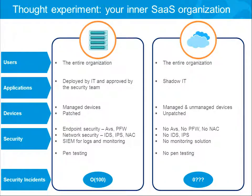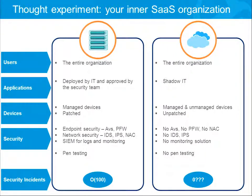But let's look at your SaaS organization — it's also part of your organization. It has the same users, but it has a lot of shadow IT, systems that IT does not know about or control. We don't know which devices are in this organization — lots of unmanaged, probably unpatched devices. Most of these devices don't have antivirus, they don't have firewalls, no NAC, no network security. This SaaS organization doesn't even have a network — everything is public. No IDSs or IPSs, no monitoring solution, definitely no pen testing. This organization is like an organization from the 90s; it has almost no security at all.